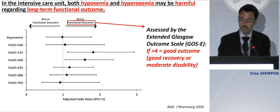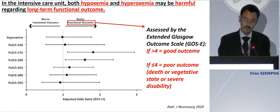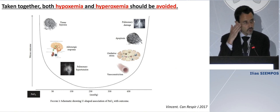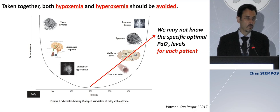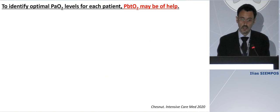The extended Glasgow Outcome Scale takes numbers from one (death) up to eight (good outcome). If it is above four, the outcome is considered good; if below five, it is considered poor. The investigators found that both hypoxemia and hyperoxemia were bad — the same U-shape we saw in the biological effects. It seems there is a sweet spot of PaO2 levels, but we may not know the specific optimal PaO2 levels for each patient. Brain tissue oxygenation monitoring may be of help in identifying that sweet spot.